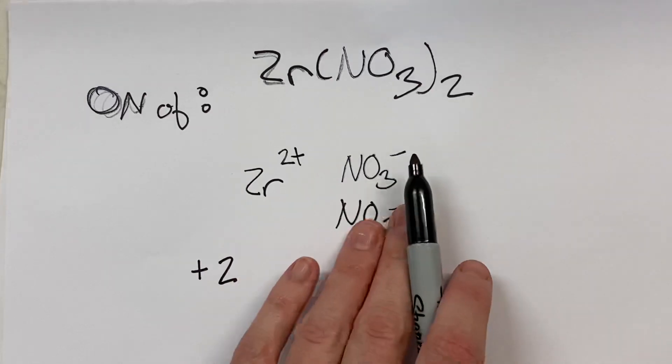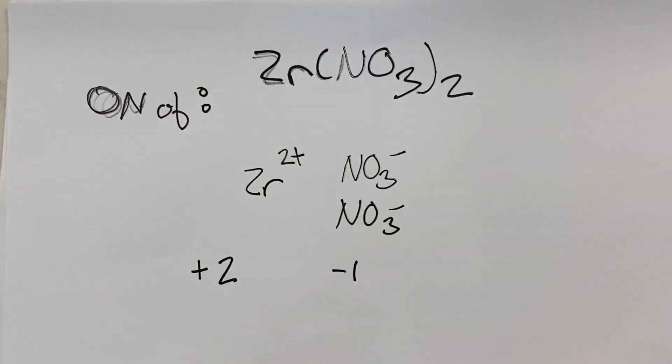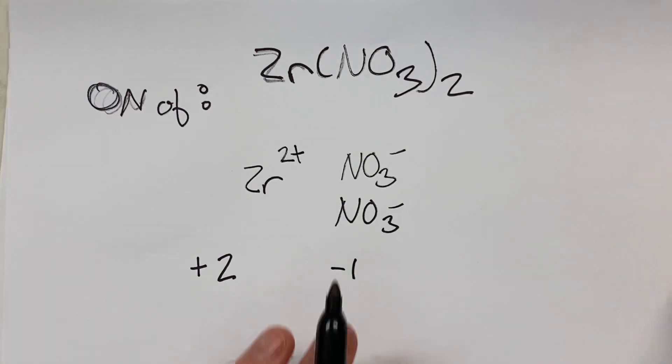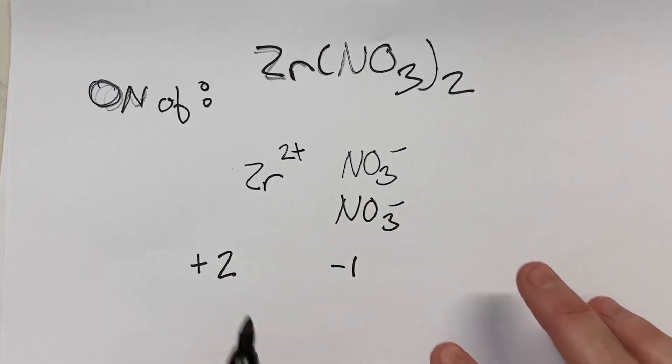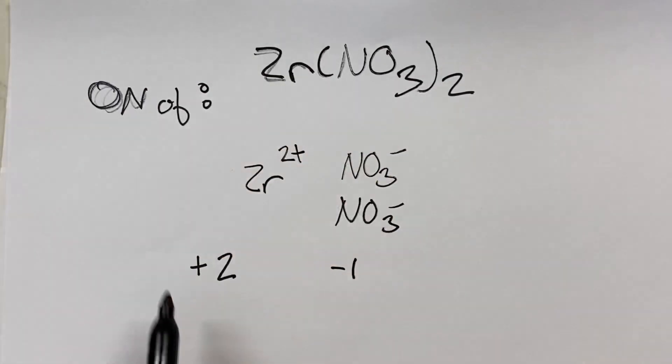Then we look at these nitrates. Now, we could say each nitrate is negative 1, and if you're breaking it down and you have the same oxidation numbers on both sides, you're looking at a reaction, you could do that. However, the question asks for the oxidation number of each element, so we need to know that of nitrogen and oxygen.